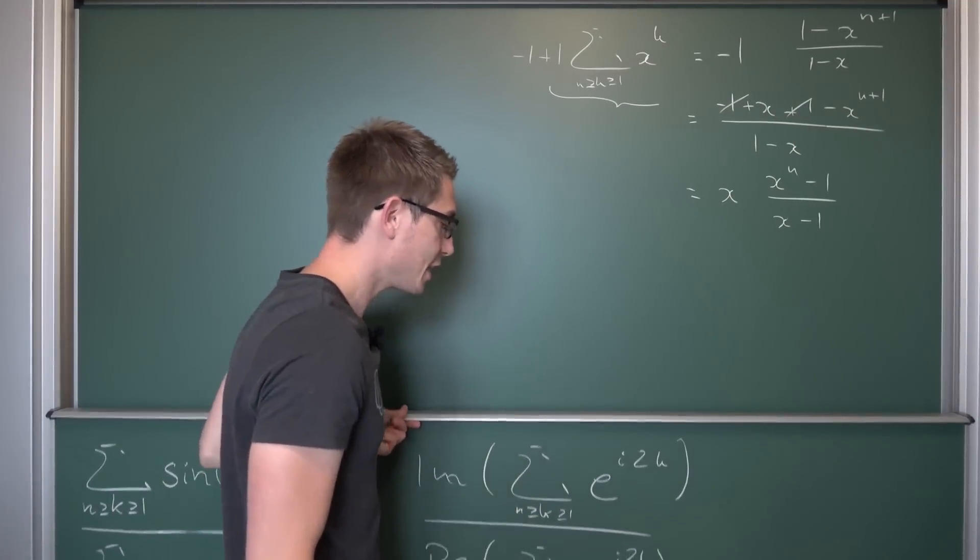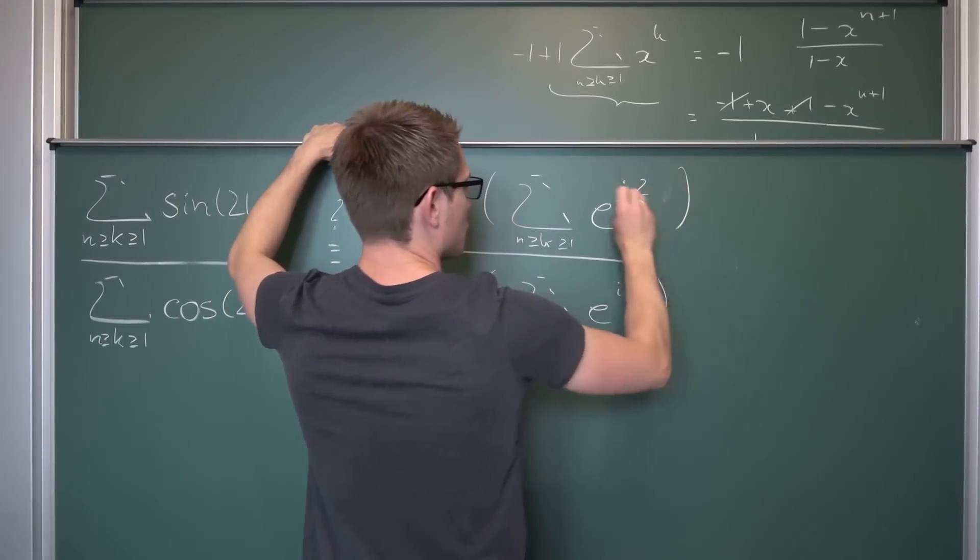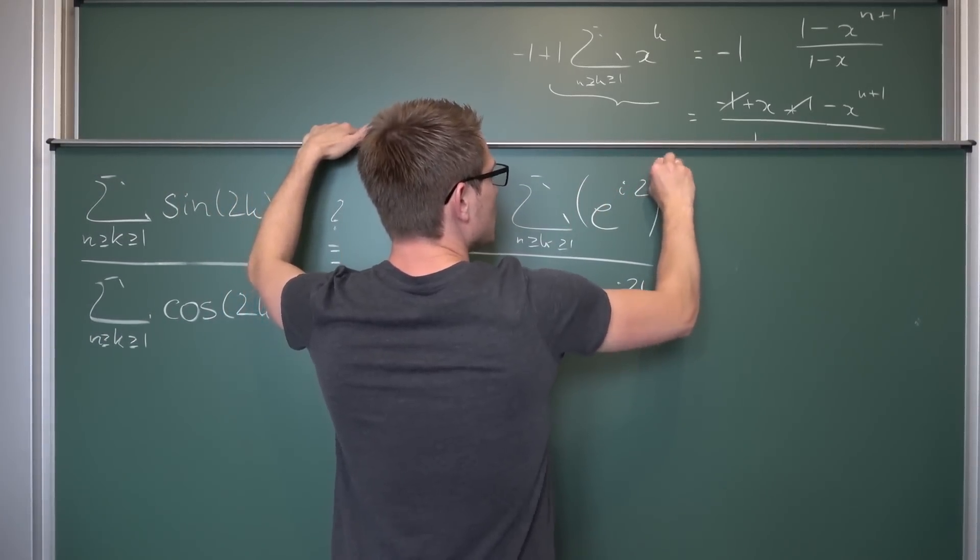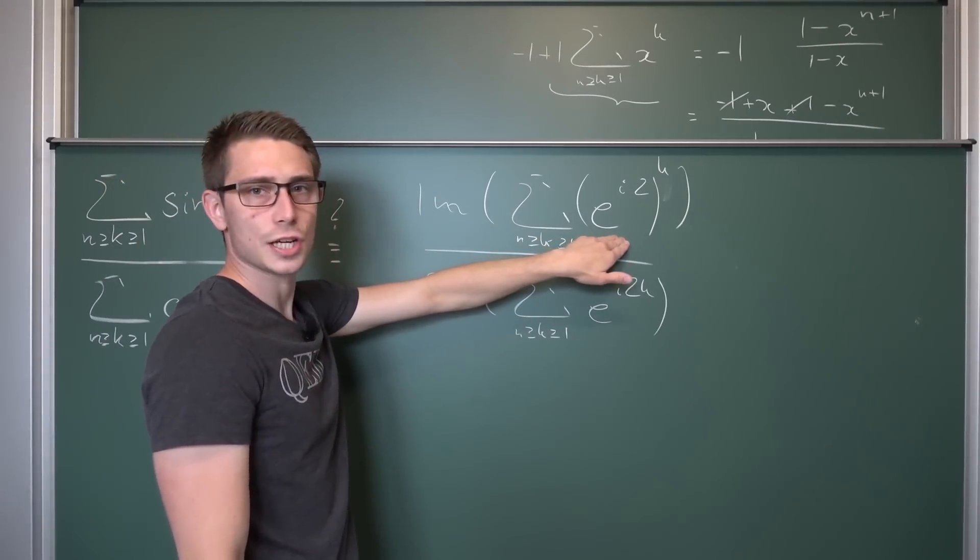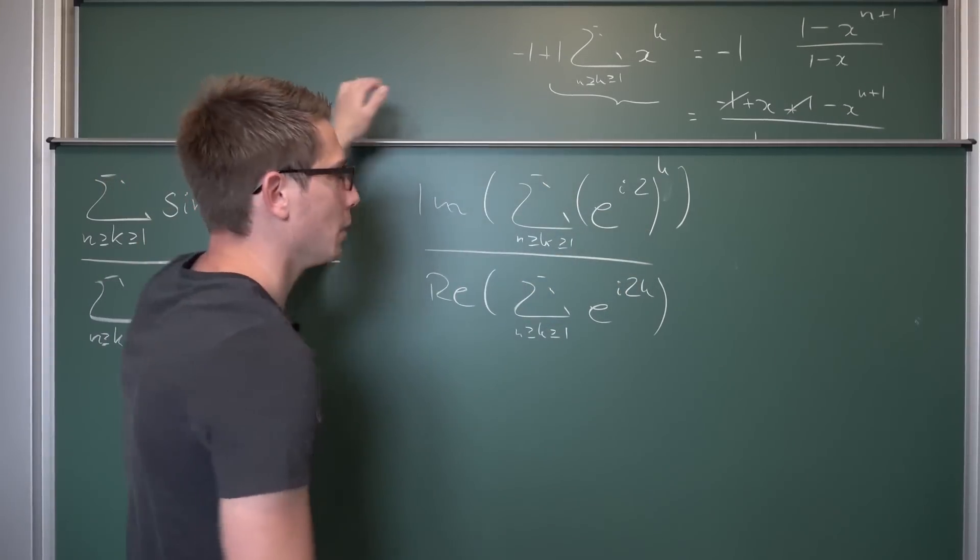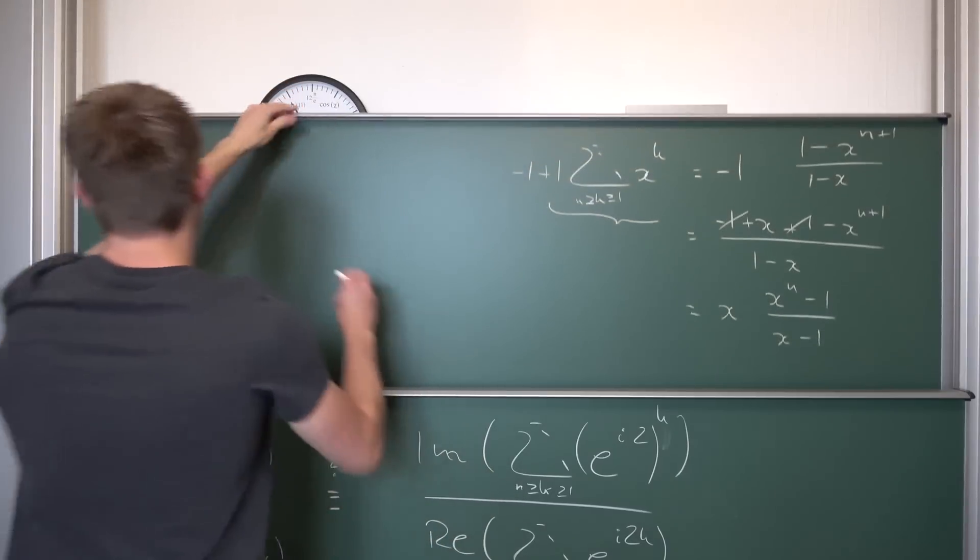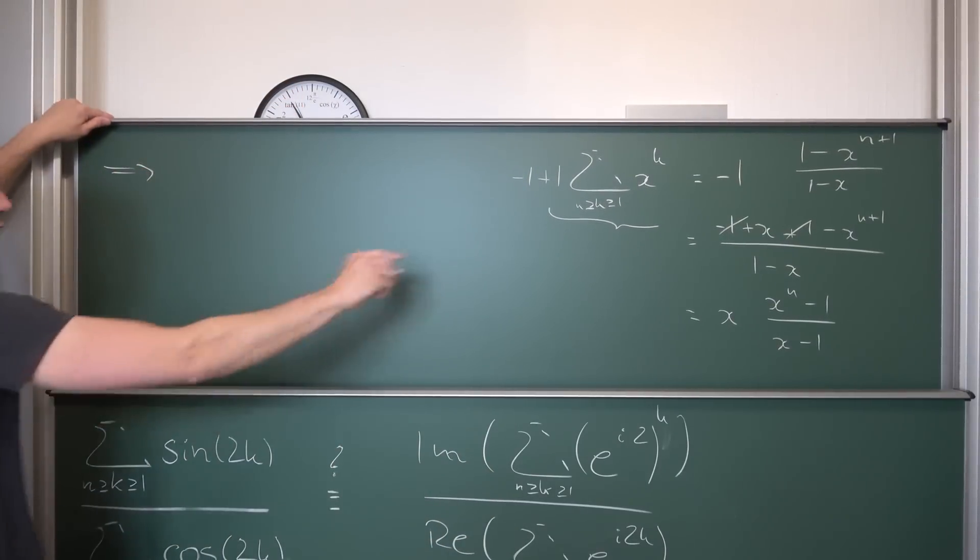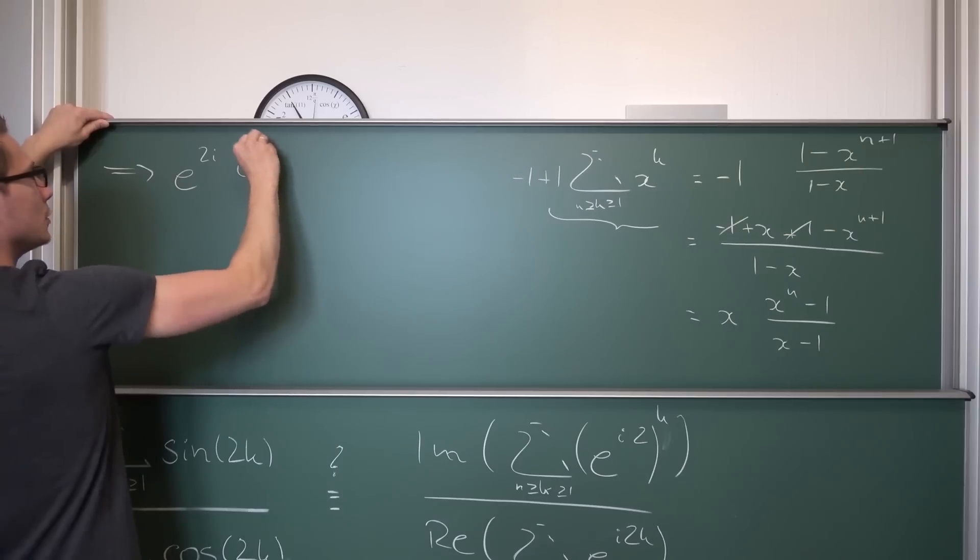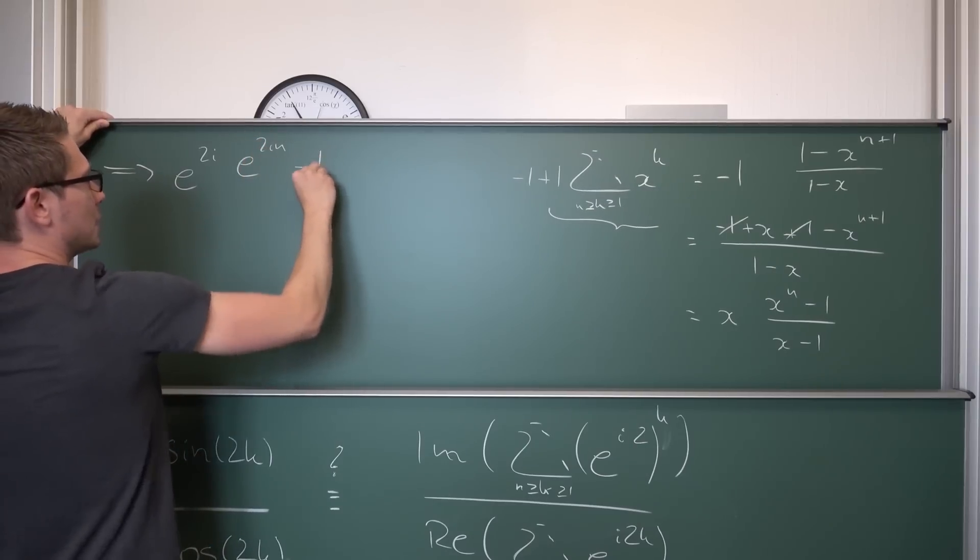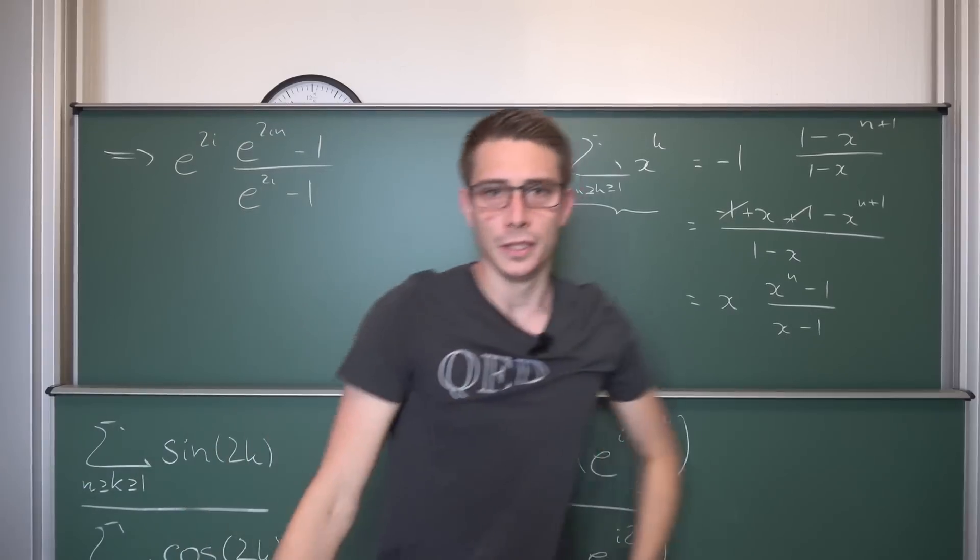And what is our x exactly? Well, our x is nothing but e^(2i) in our case, because we can use exponentiation rules to bring the k to the outside, basically exponentiating an exponential. And this is just (e^(2i))^k. Meaning our x is e^(2i). And we are going to plug it in and see what we are going to get. Meaning we are going to have e^(2i) and then (e^(2i·n) - 1)/(e^(2i) - 1). Hmm.